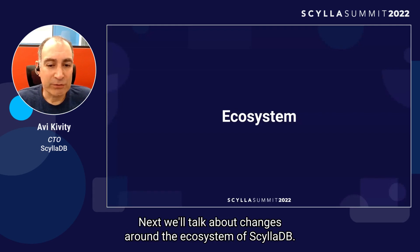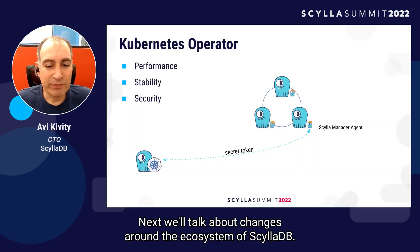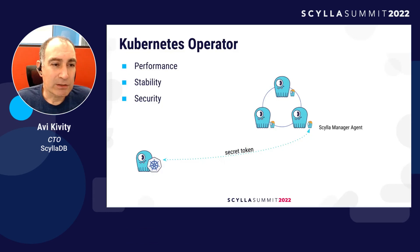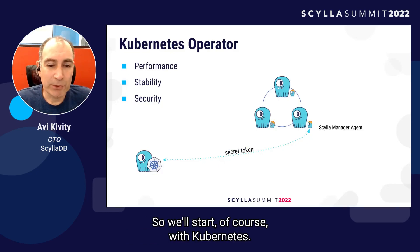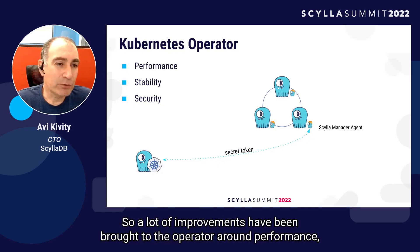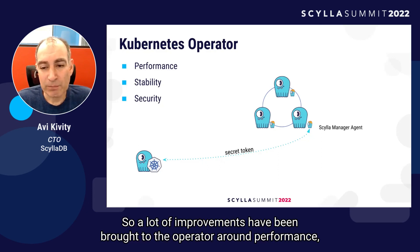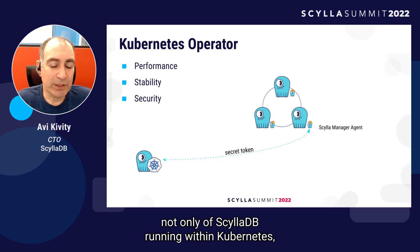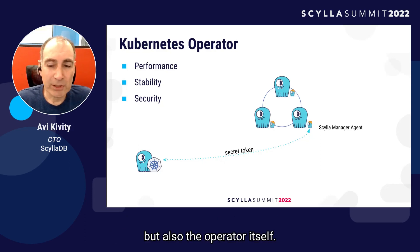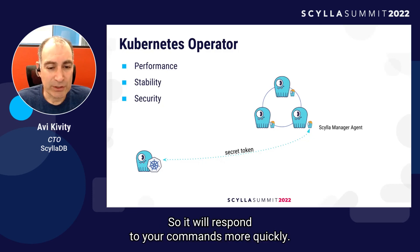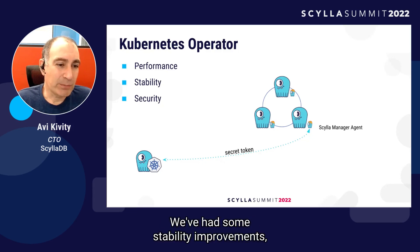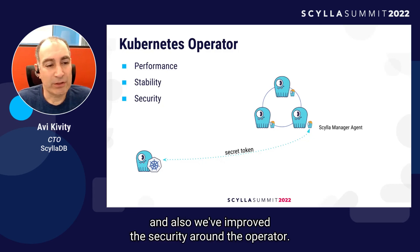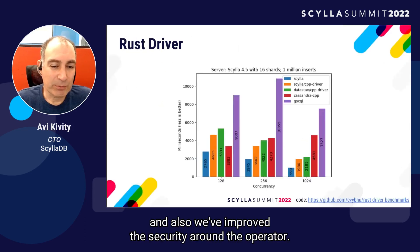Let's talk about changes around the ScyllaDB ecosystem. Starting with Kubernetes: many improvements have been brought to the operator around performance — not only of ScyllaDB running within Kubernetes, but also of the operator itself, so it will respond to your commands more quickly. We've had stability improvements and also improved security around the operator.